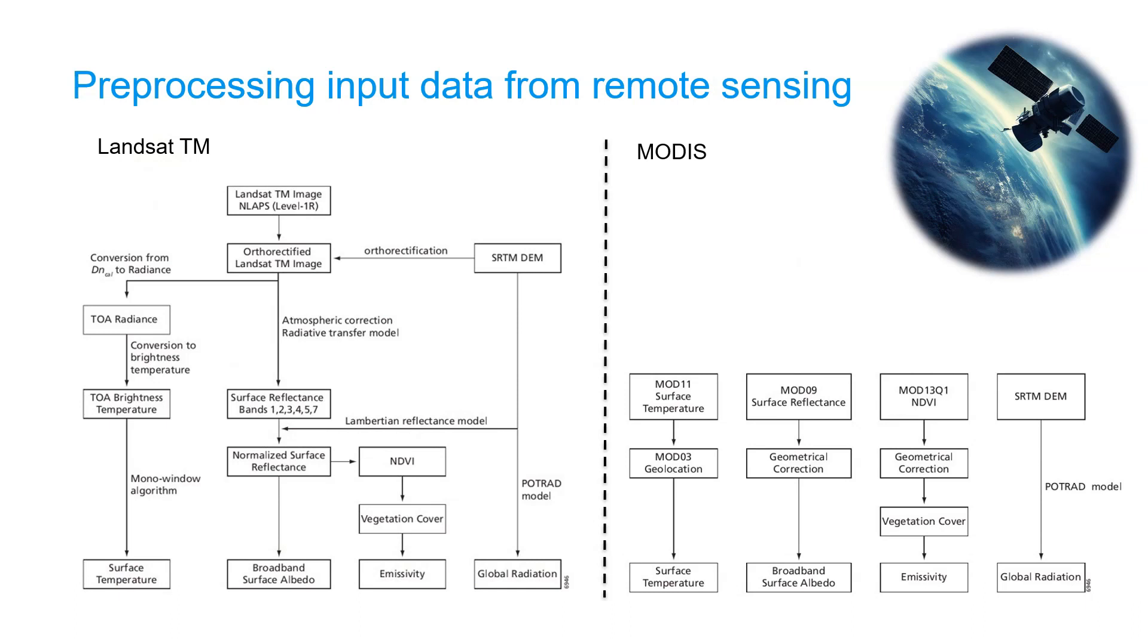Remote sensing based surface energy balance models need a lot of input data derived from remote sensing. It's very common that these models need the land surface temperature or kinetic temperature, the broadband surface albedo, the emissivity and the incoming solar radiation. It depends on the sensor or the product that is available from the sensor what workflows you follow. On the slide you see two examples.